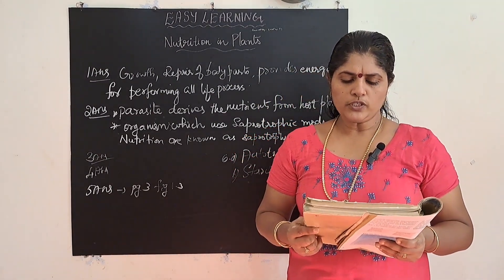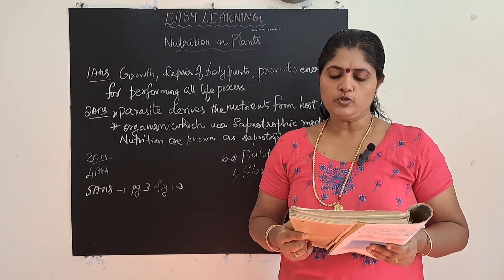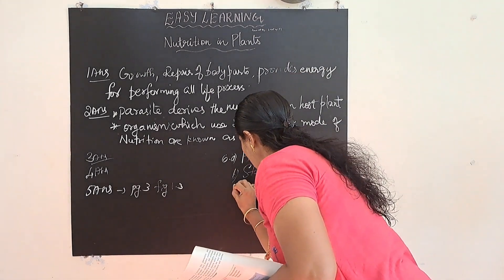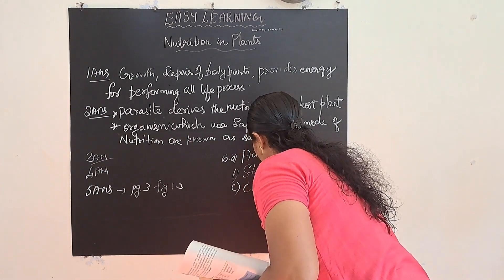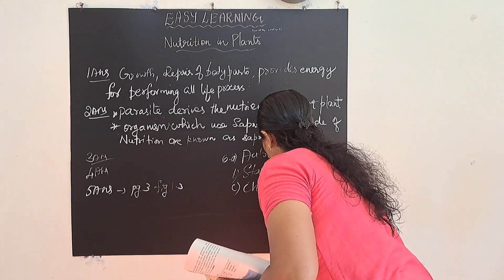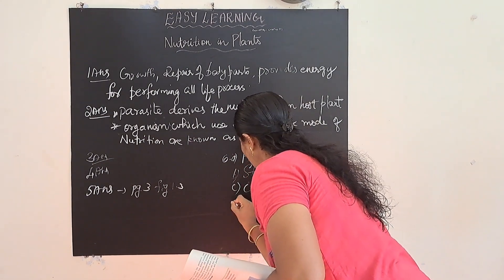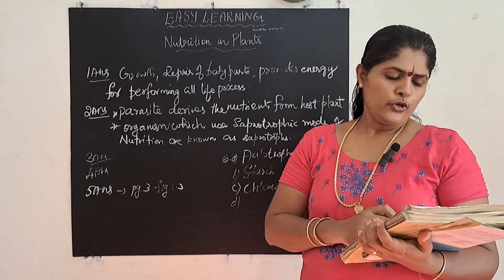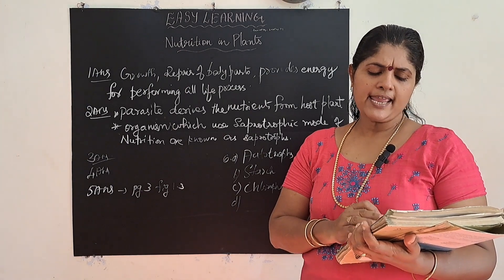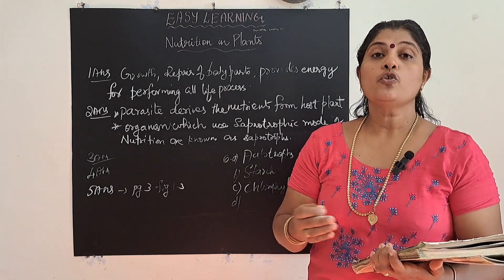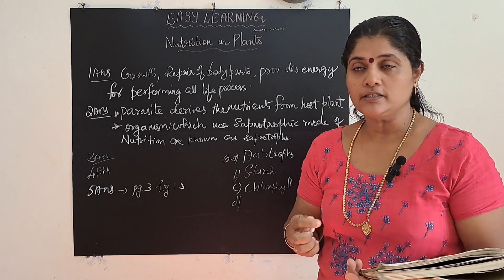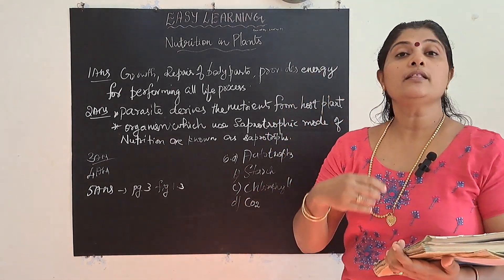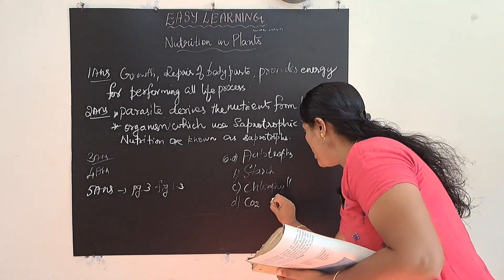Question C: in photosynthesis, solar energy is captured by the pigment called — the pigment present in the leaf is known as chlorophyll. Question D: during photosynthesis, plants take in dash and release dash. Plants take in carbon dioxide and during photosynthesis they release oxygen.